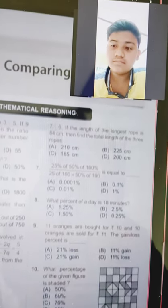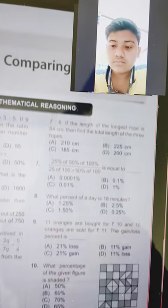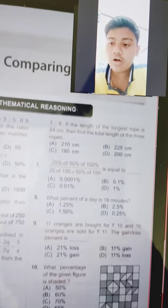Yes sir. At first, cost price of 11 oranges is equal to rupees 10. Okay. Now, cost price of 1 orange is equal to rupees 10 by 11. Very good. So here it is given that cost price of 11 oranges is equal to rupees 10. So first you are finding out cost of 1 orange, right? So that is 10 by 11. Fine. Next.